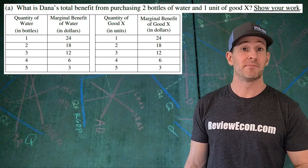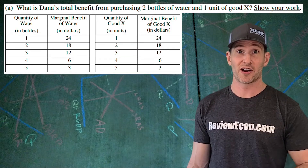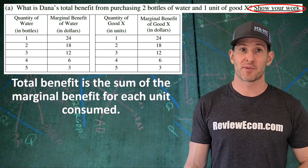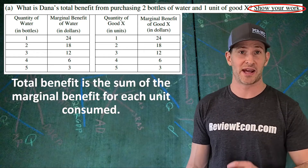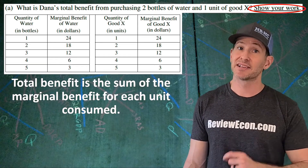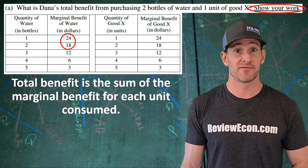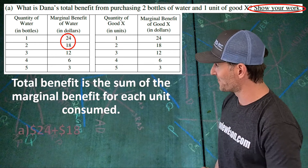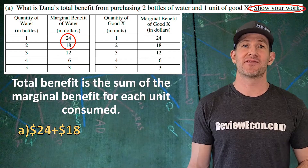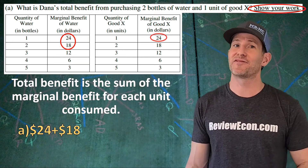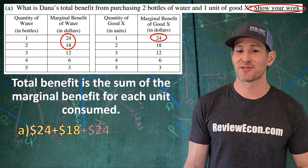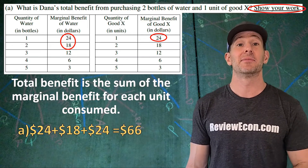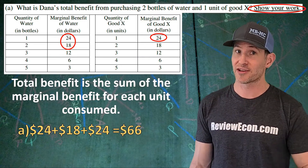For part A, we have to calculate Dana's total benefit for purchasing two bottles of water and one unit of good X and show our work in that calculation. The total benefit of a product comes from the sum of the marginal benefit of each unit consumed. Dana's first bottle of water is worth $24 of marginal benefit, the second bottle is worth $18, and the first unit of good X is worth $24. Add those three numbers together and that gives us a total benefit of $66. If you show your work there, you've got your point.